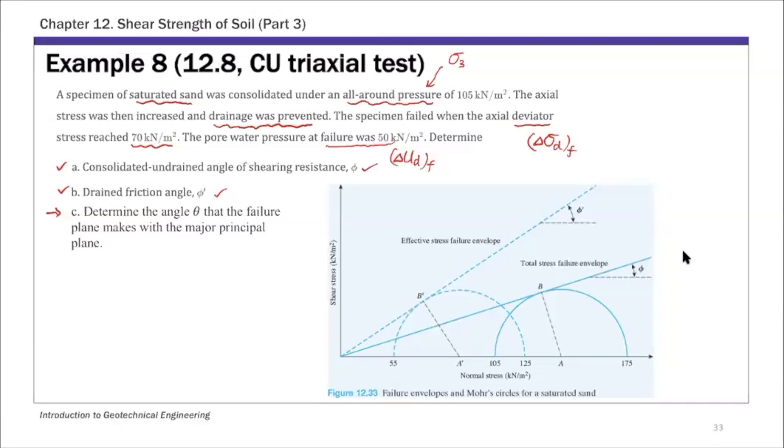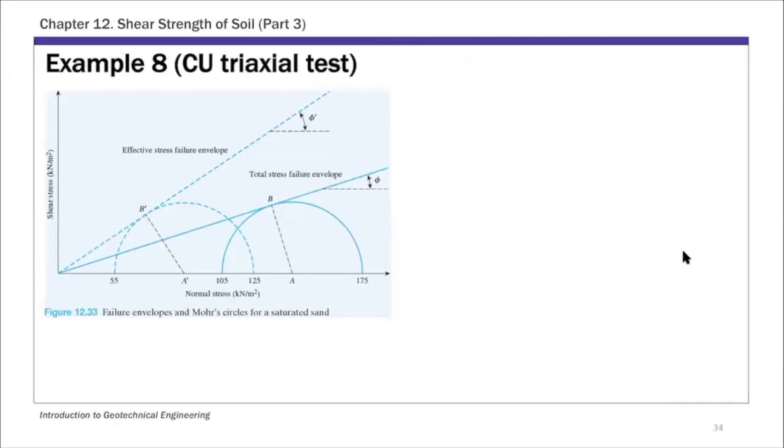Let's find out all the principal stress values, and then we can calculate these strength parameters. First, sigma 3 is given as 105 kPa. Delta sigma df is 70 kPa, and delta udf, the pore water pressure at failure, is 50 kPa. That's what we get from the problem statement.